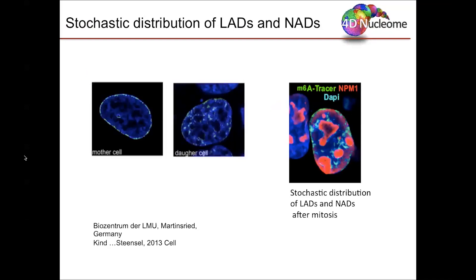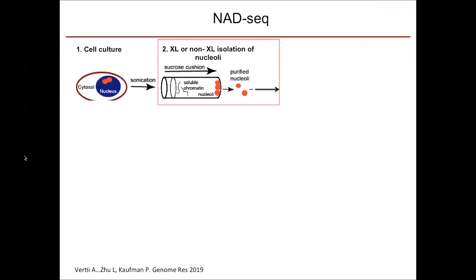This does not exclude the potential presence of nucleolus-specific regions that localize around the nucleolus and end up in the same location after mitosis. To address this question and characterize mouse NADs, we performed NAD sequencing, and here is a schematic representation of our experimental pipeline.